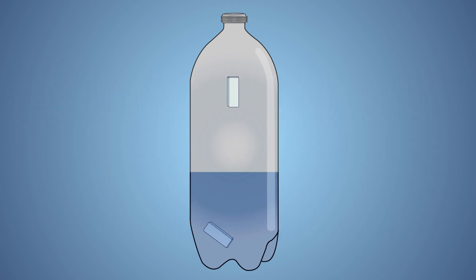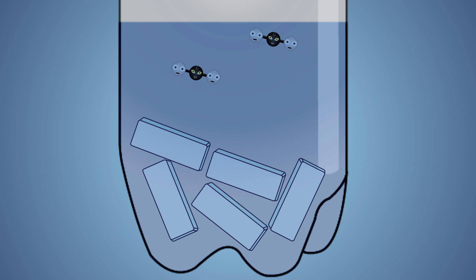When we drop pieces of dry ice into our two liter soda bottle that contains hot water, we are quickly heating the solid carbon dioxide. Warming up our dry ice forces it to change state from a solid to a gas. The warmer the water, the faster this process will occur.